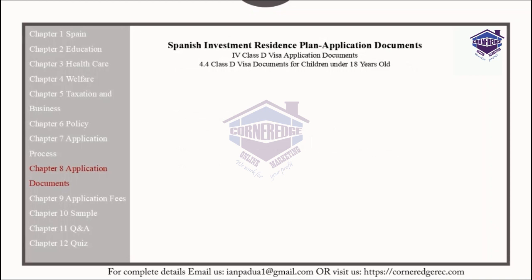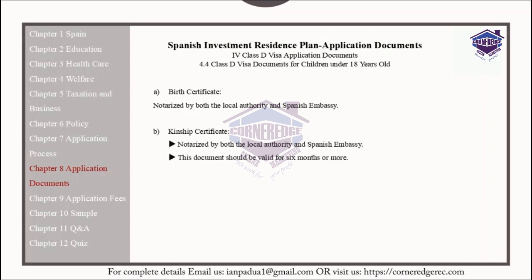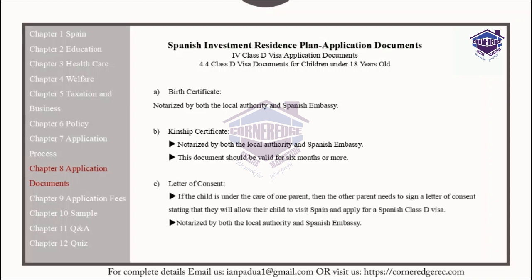The following documents should be provided for children under the age of 18: a birth certificate that has been notarized by both the local authorities and the Spanish embassy; a kinship certificate, notarized by both the local authorities and the Spanish embassy, which should be valid for six months or longer; and a letter of consent. If the child is under the care of one parent, the other parent needs to sign a letter of consent stating that they will allow their child to visit Spain and apply for a Spanish Class D Visa. This must also be notarized by both the local authorities and the Spanish embassy.